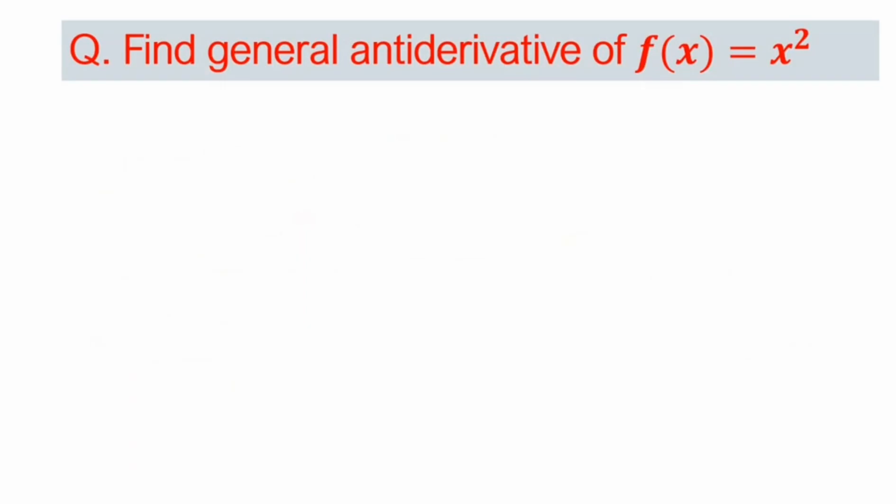Now we'll discuss the anti-derivative and how to find the anti-derivative of a function f(x) equals x squared. So step by step, we'll discuss it here. Step one: